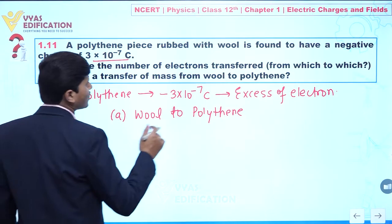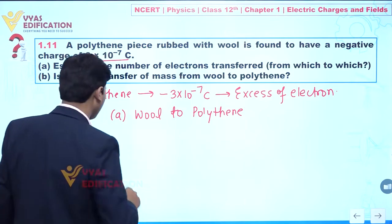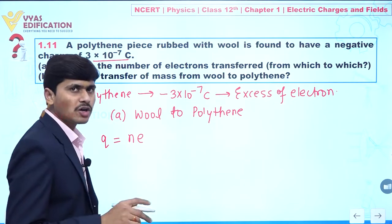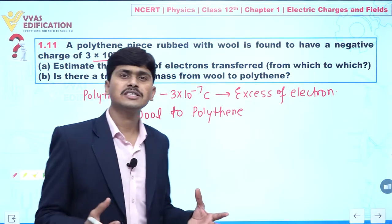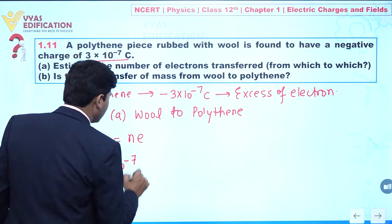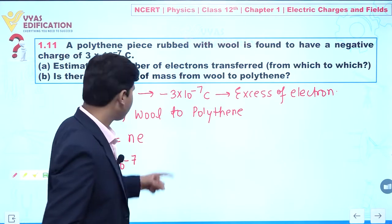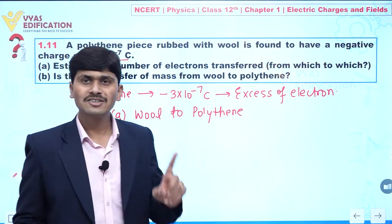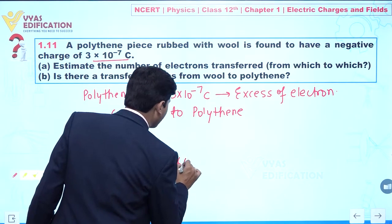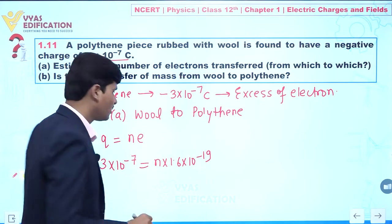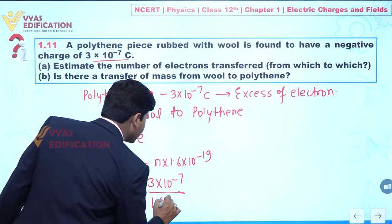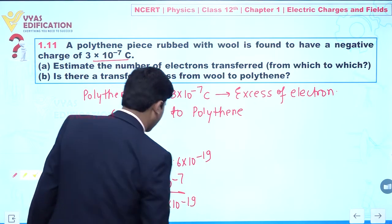It is given that the total charge is 3 into 10 to the power minus 7 coulomb. We can write Q equal to ne. Talking about magnitude, to find how many electrons were transferred, we write Q = 3 into 10 to the power minus 7, divided by the electron charge 1.6 into 10 to the power minus 19 coulomb.